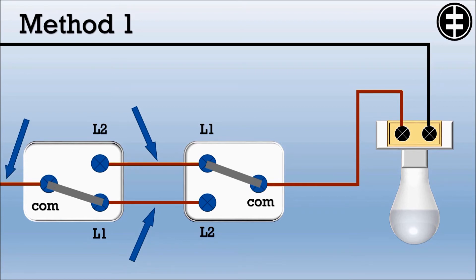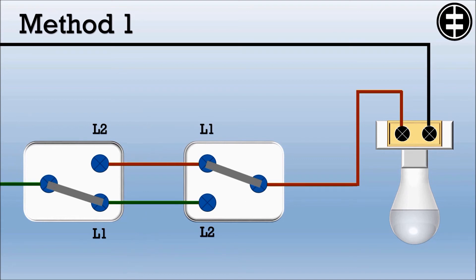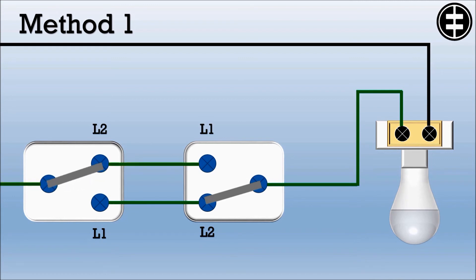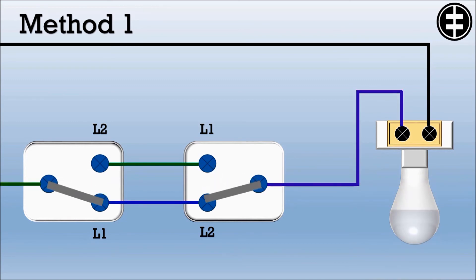For safety, the connections between the two switches must use the same cable color as the line connections — follow the standard color code in your area. For example, if brown cable is used for line connections, use brown cables between the two switches as well, since they could be live at any time. When electricity passes through switch one but switch two breaks the circuit, flipping switch two completes the circuit and the bulb lights up. Each time you flip either switch, the bulb status changes from off to on and vice versa.